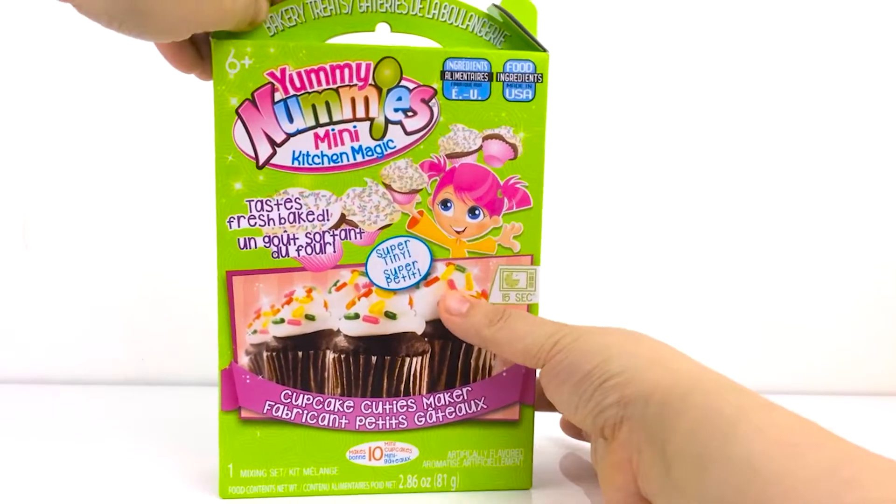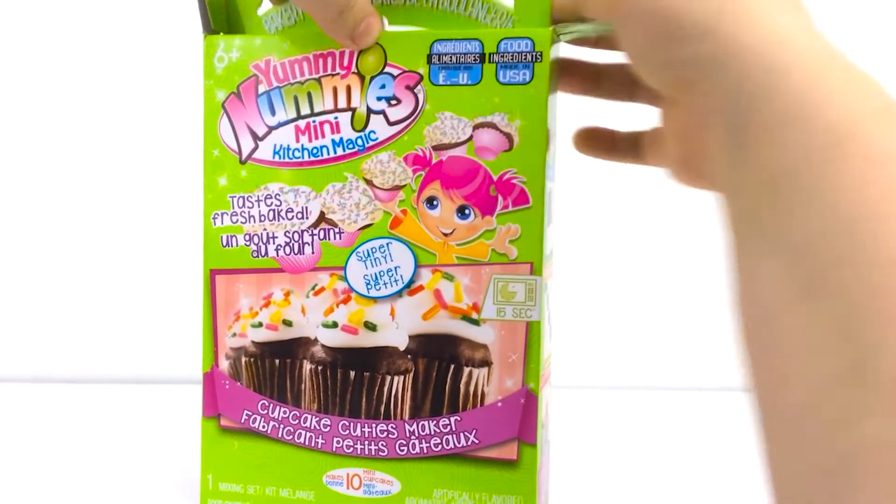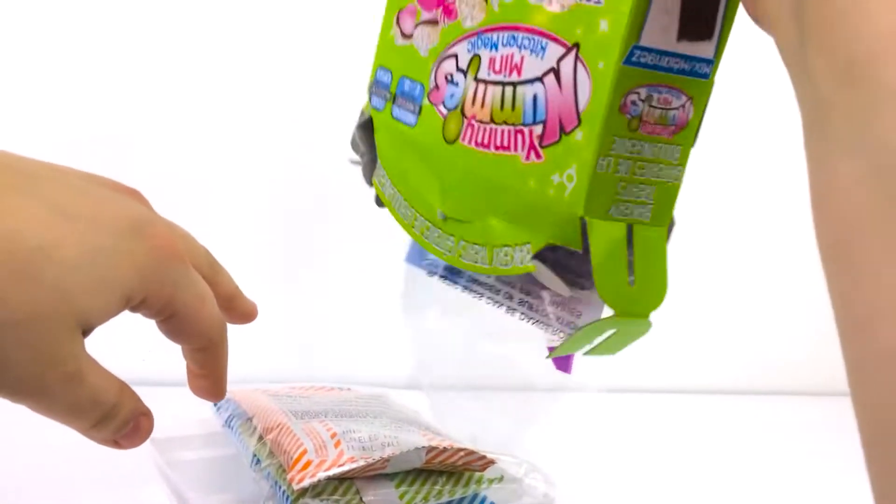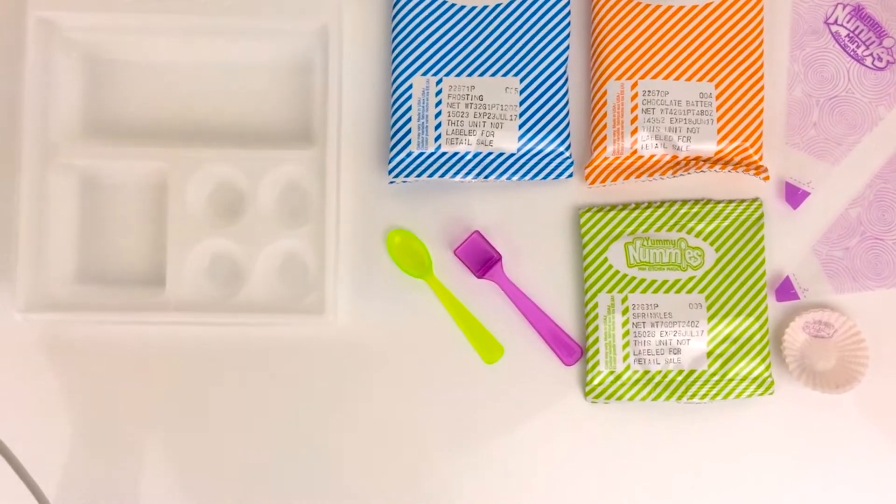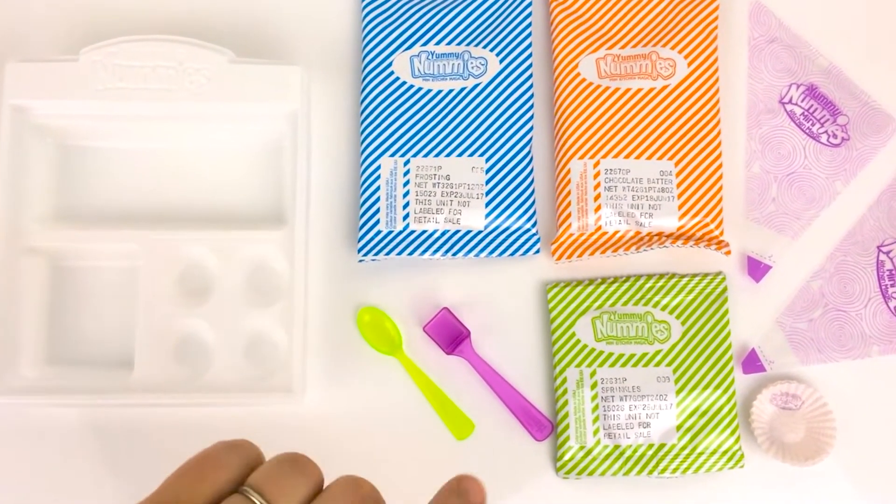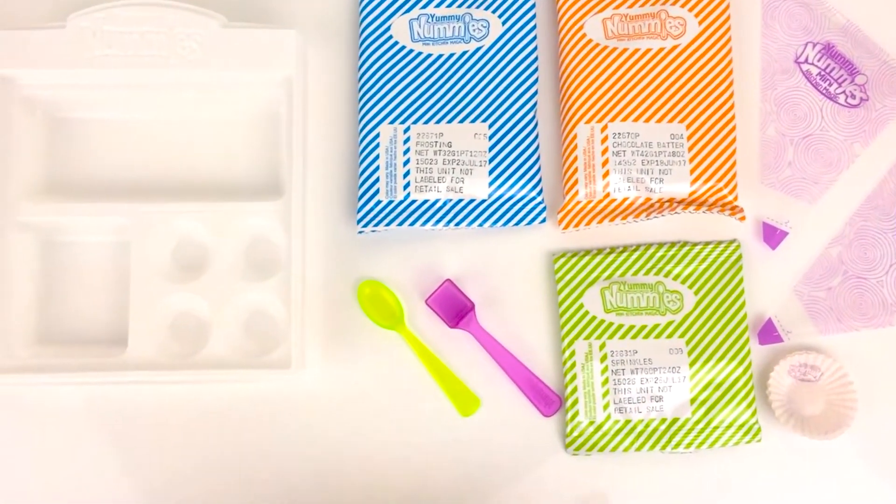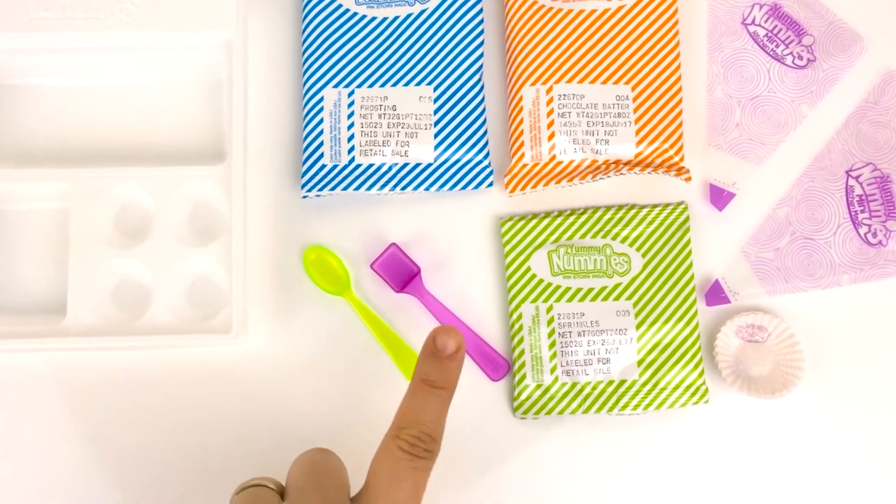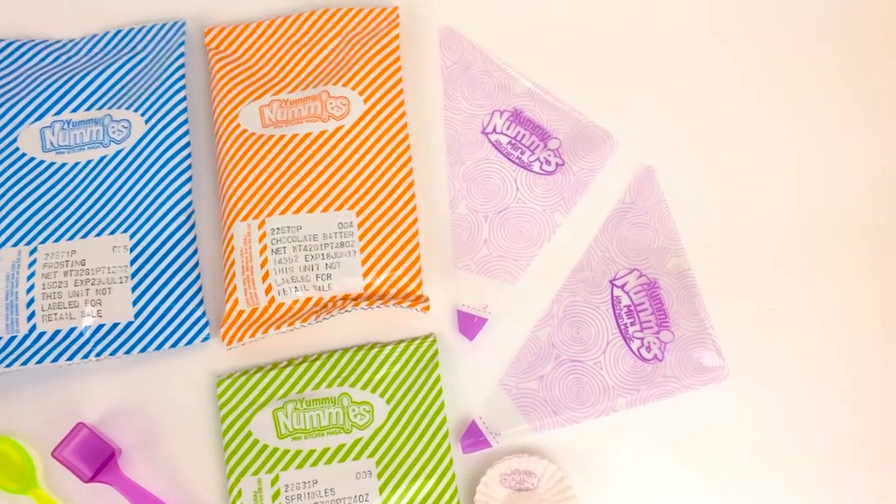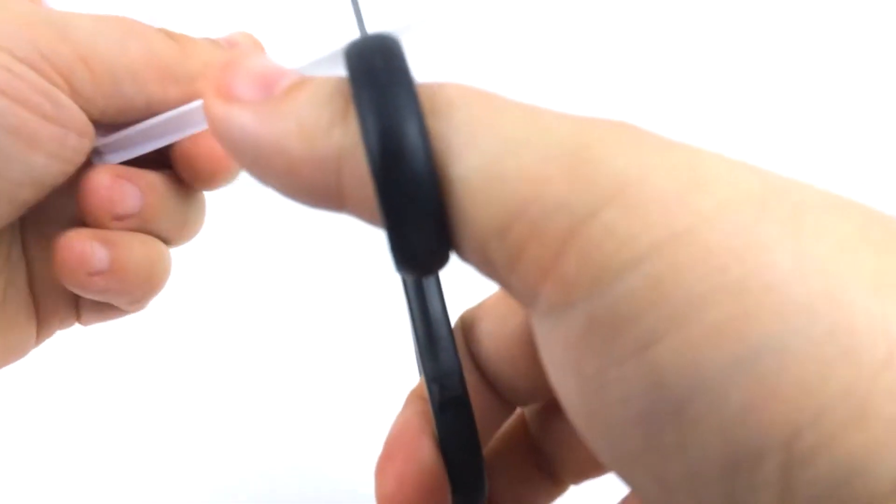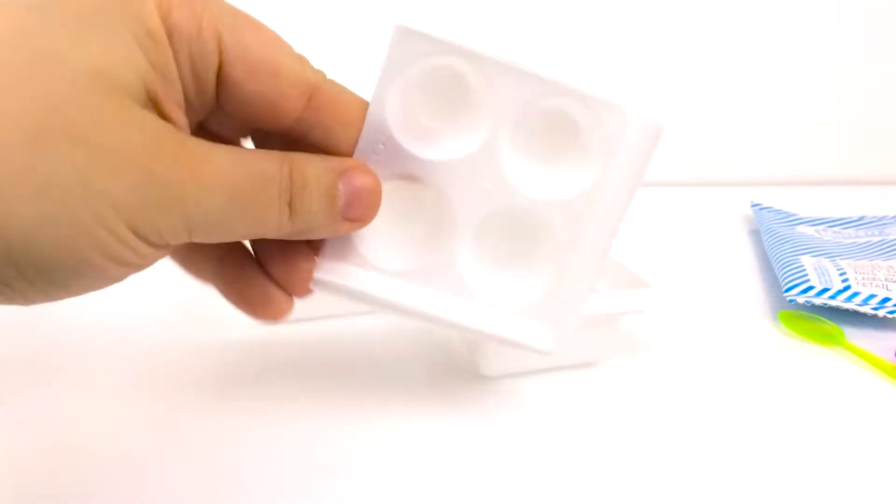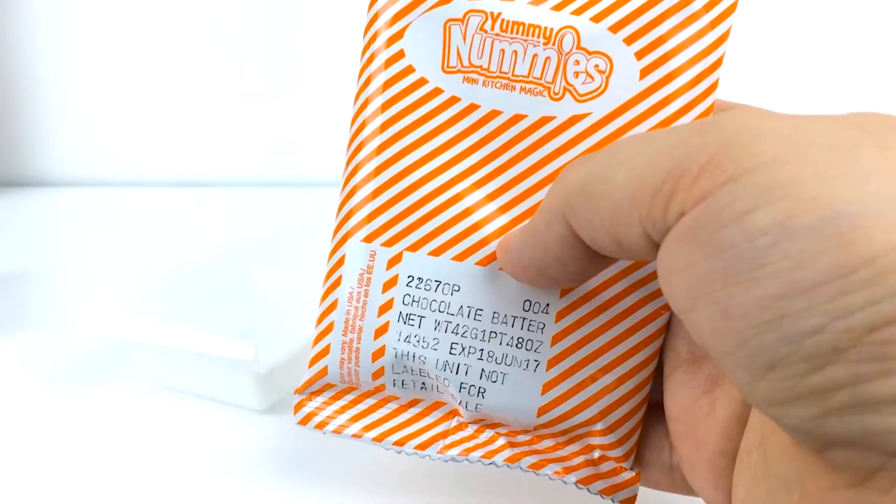We're going to open up the box. So we've got our little mixing trays, our little baking pan, we've got frosting, chocolate batter, sprinkles, a little mixing spoon, a measuring cup, little muffin liners, and some piping bags. So we're going to cut the tray for our chocolate batter.